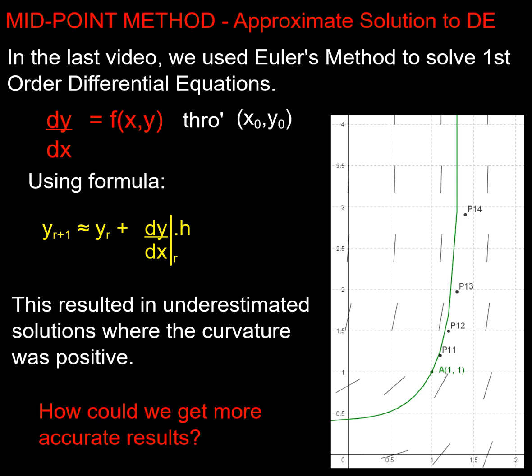In my video on the Euler method of coming up with an approximation for a first-order differential equation of this form through a start point, we saw that all the points we were creating, all our approximations, were a bit low in terms of their y-values. They were all on that side, and this is in a case where my curvature, my second differential, is positive and the curve's going like that.